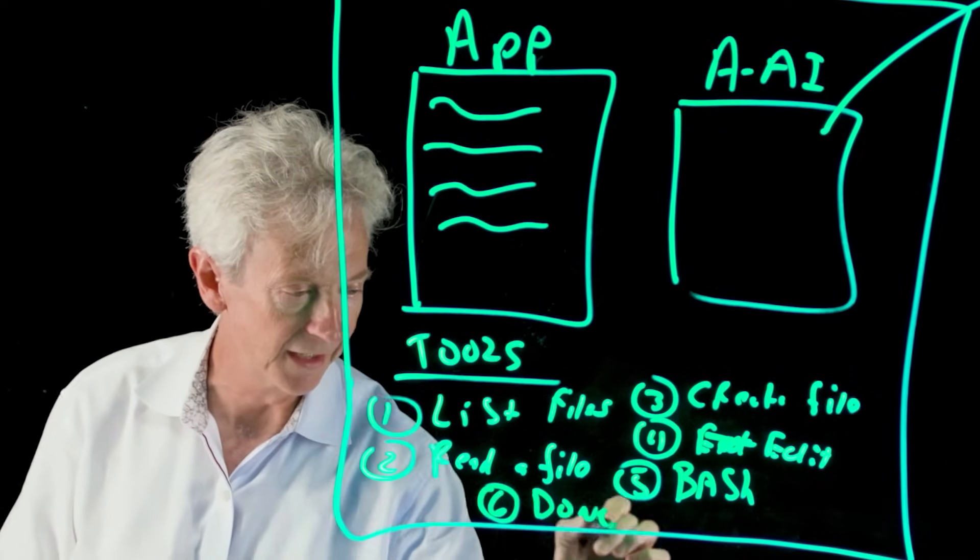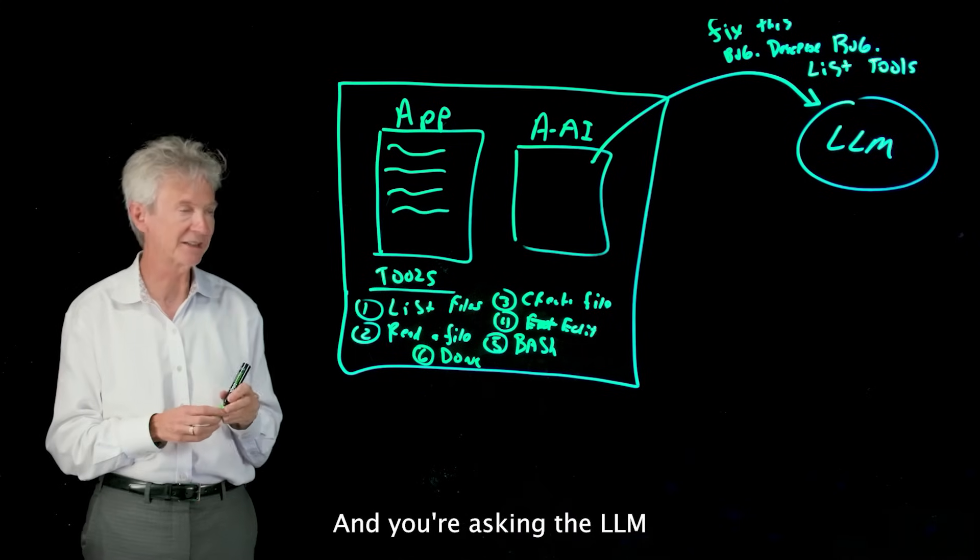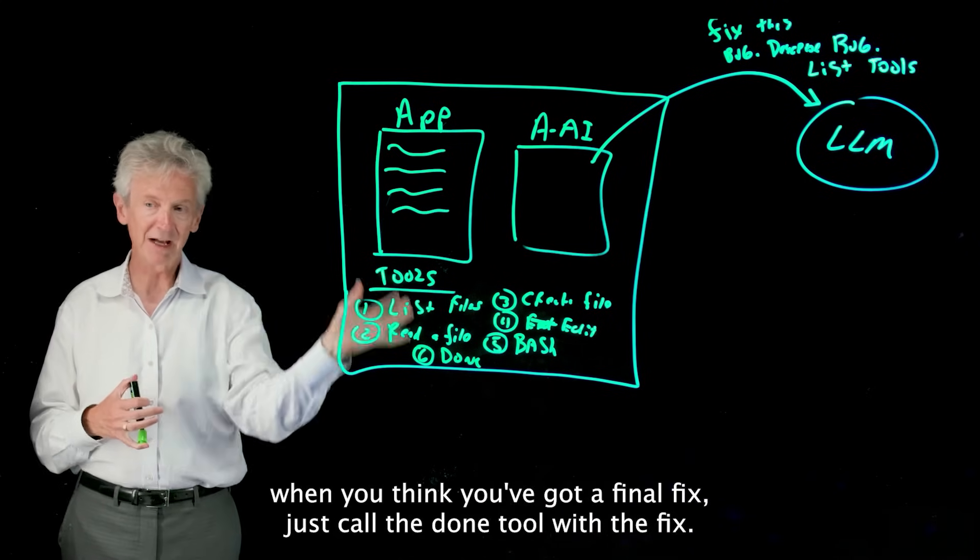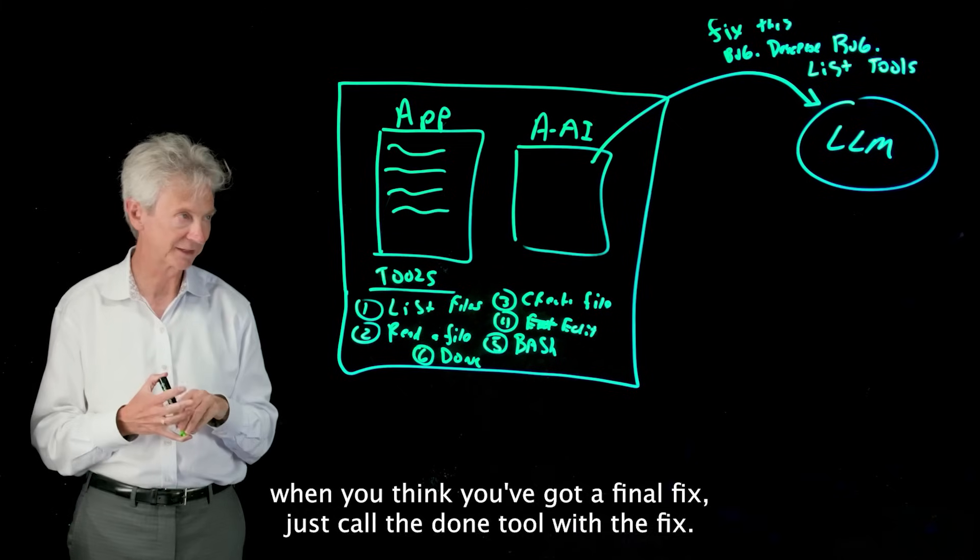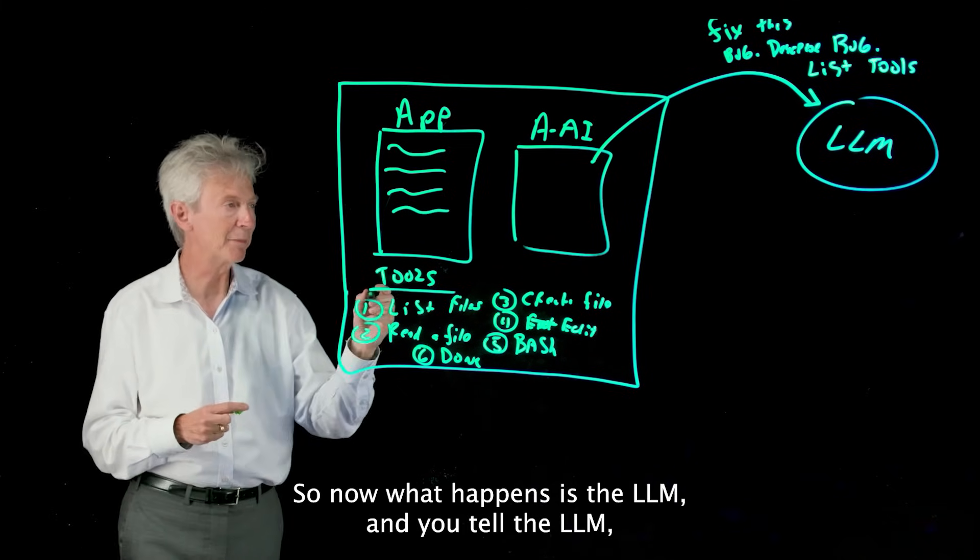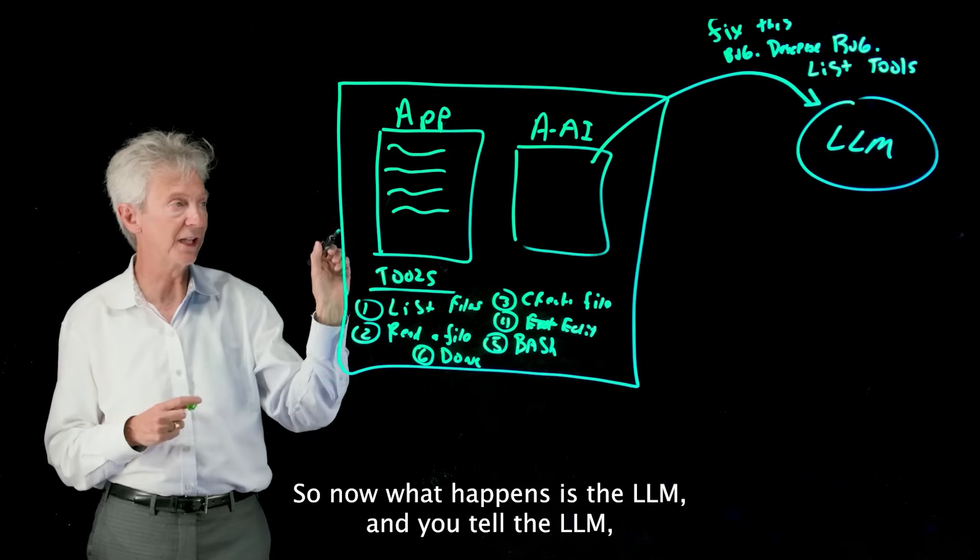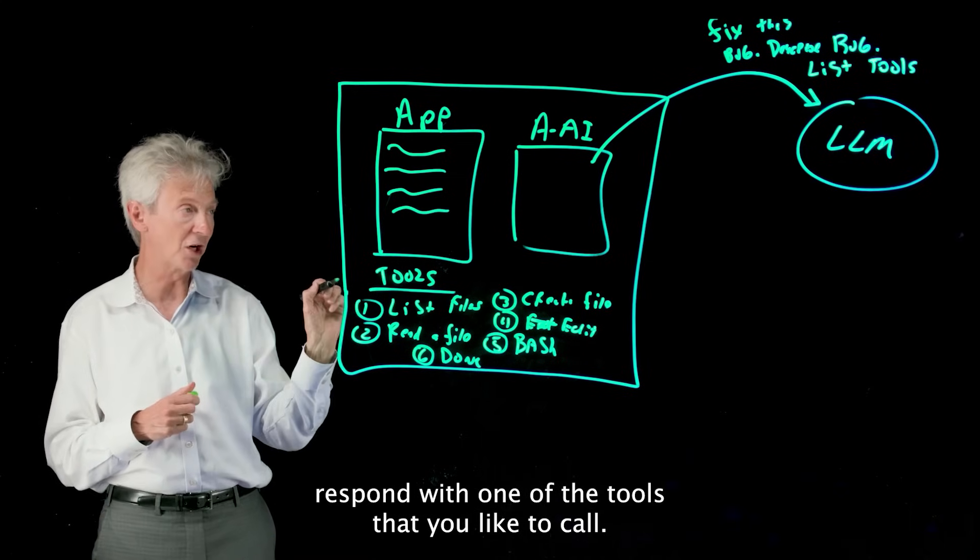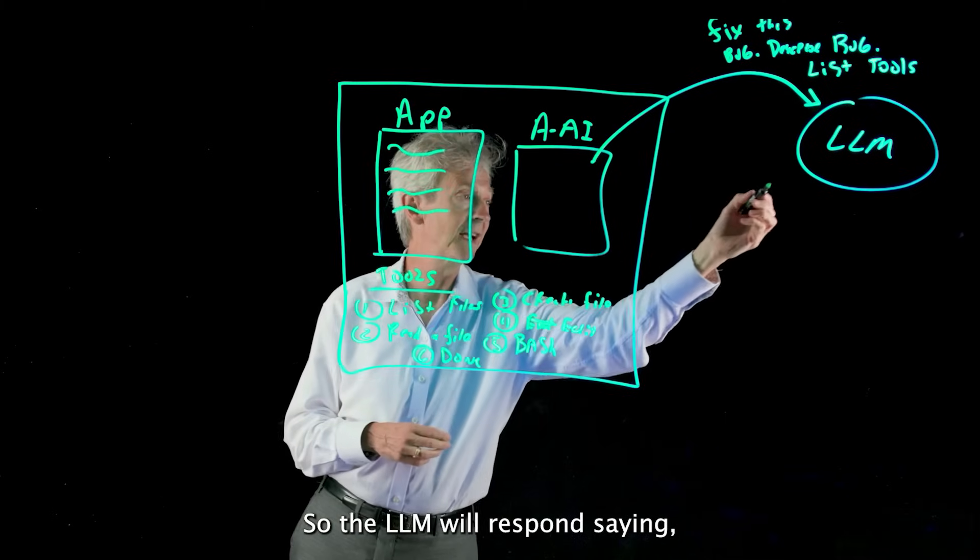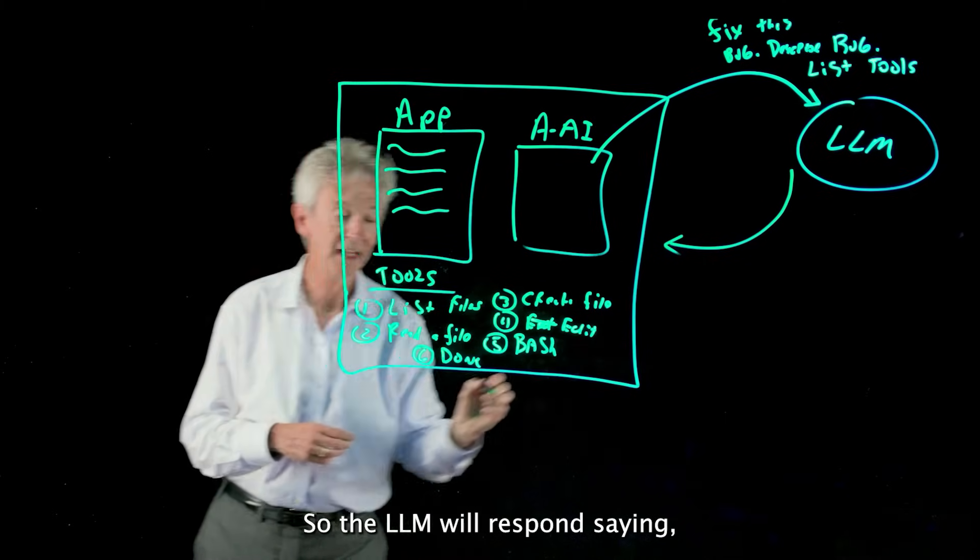And then the last tool is just something called done, and you're asking the LLM when you think you've got a final fix just call the done tool with the fix. Now what happens is the LLM, and you tell the LLM respond with one of the tools that you'd like to call, so the LLM will respond saying I want to list the files in the directory.